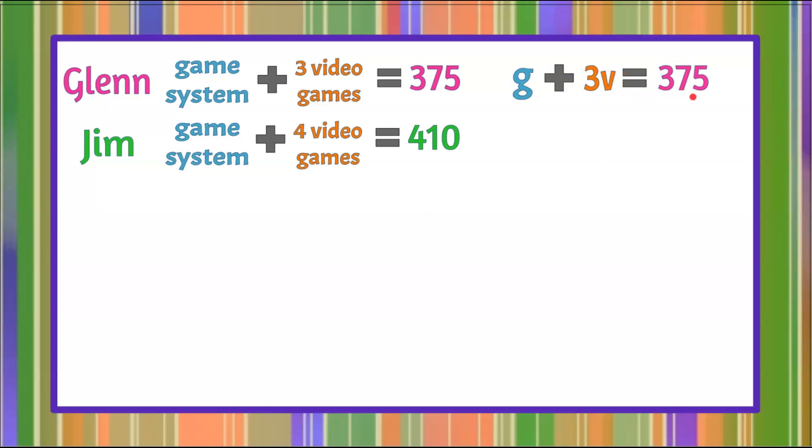We'll write an equation for Jim. Jim also bought a game system, and he bought four video games. So four times V, the cost of one video game, and that equals $410.